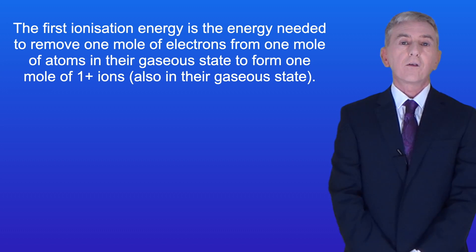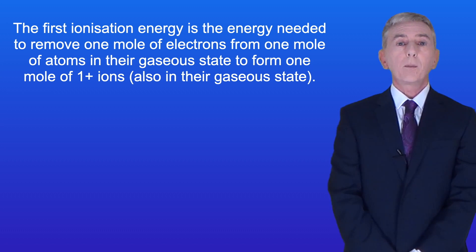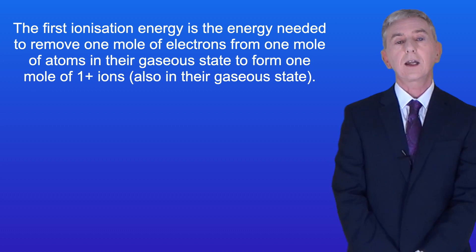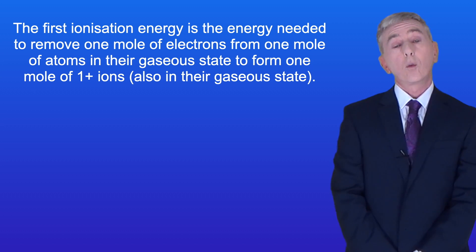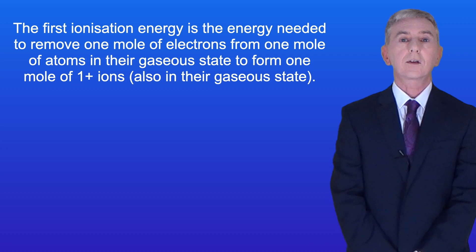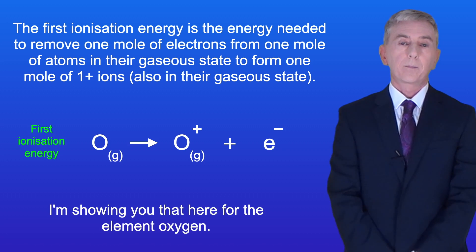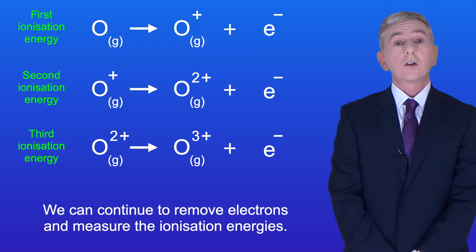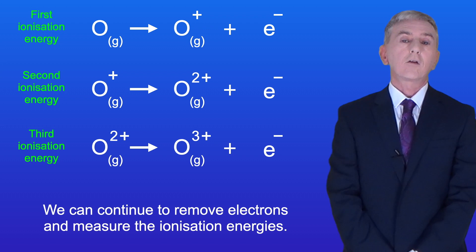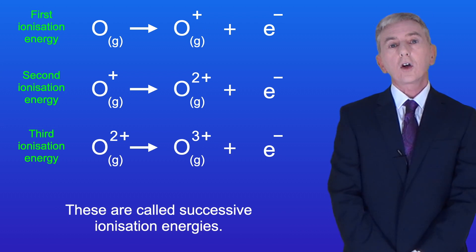So as we've seen, the first ionization energy is the energy needed to remove one mole of electrons from one mole of atoms in their gaseous state to form one mole of one positive ions also in their gaseous state — shown here for the element oxygen. We can continue to remove electrons and measure the ionization energies. These are called successive ionization energies.